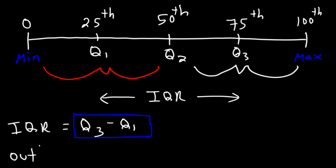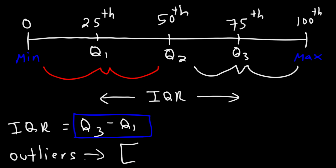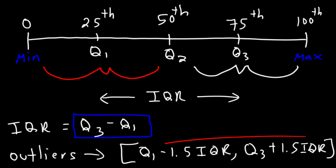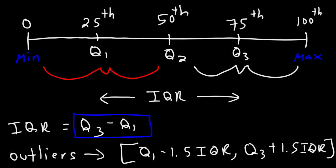Now let's talk about the outliers. Sometimes you may have a data point that is either all the way to the right, that's very high, or to the left, that is very very low. Here's what you need to do in order to find if a number is an outlier. The outliers will exist outside of this range — it's going to be outside of Q1 minus 1.5 times the IQR value to Q3 plus 1.5 times the IQR value. So if you have a number that's in the list and it's not in this range, it's outside of it, then that number is considered to be an outlier.